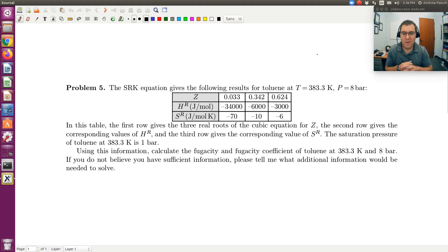Alright, let's take a look at another fun problem. We're looking at calculating fugacity and fugacity coefficient using a cubic equation of state. Problem 5: the SRK equation of state gives the following results for toluene at a temperature of 383.3 kelvin and a pressure of 8 bars.